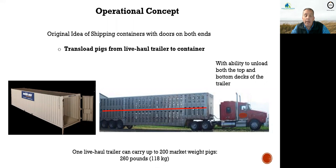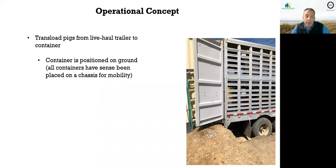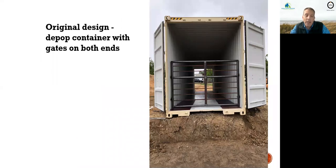One live haul trailer can carry up to 200 market weight pigs — anywhere from 260 to 280 pounds. One trailer requires two containers to accept the full load: the top deck goes into one container and the bottom deck into the other. This is one of our original designs showing the pigs being transloaded into the depop container. Notice how the container was originally sitting on the ground; since that picture was taken we have converted all of them to sit on their own chassis, which makes them perfect for mobility — they require a prime mover and become a tractor-trailer unit.